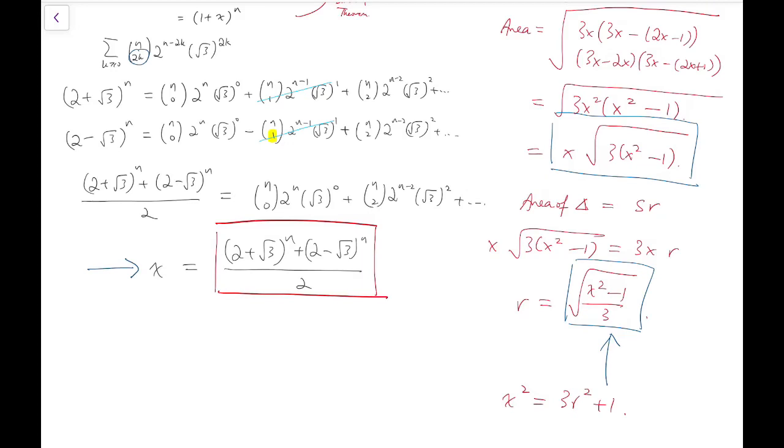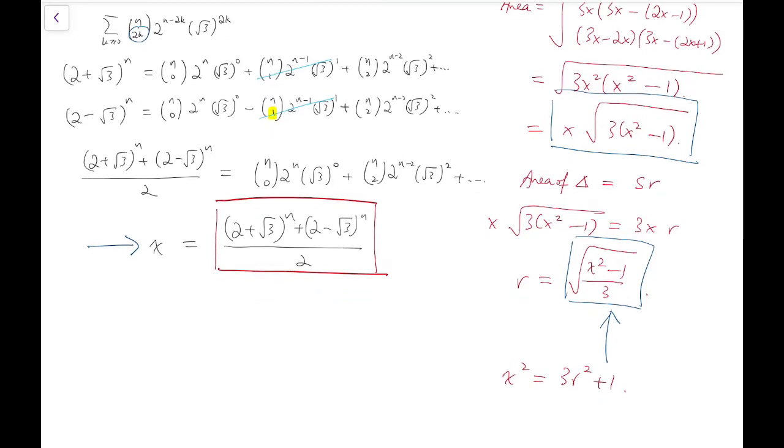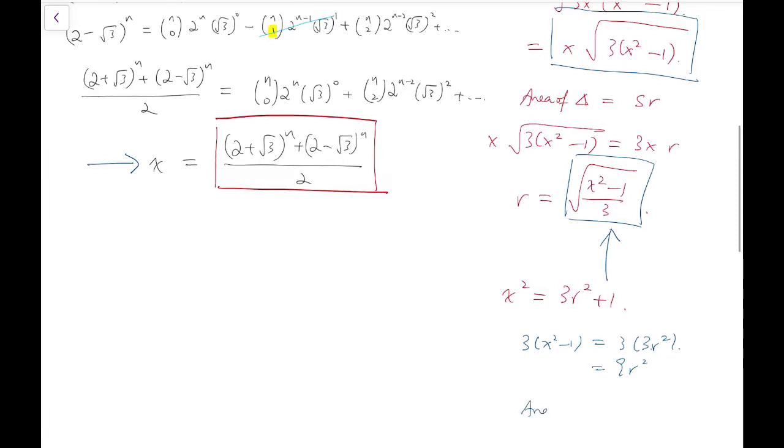I'm going to do this. And in fact, if I can achieve this, then we know that square root of 3 times x squared minus 1 is simply 3r. So x squared minus 1 will be 9r squared, because we know it's 3 times 3r squared. And so area would then be 3xr, also an integer. So it will suffice for us to show that r is an integer.